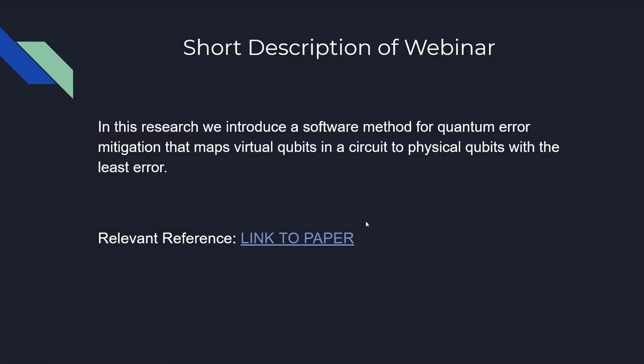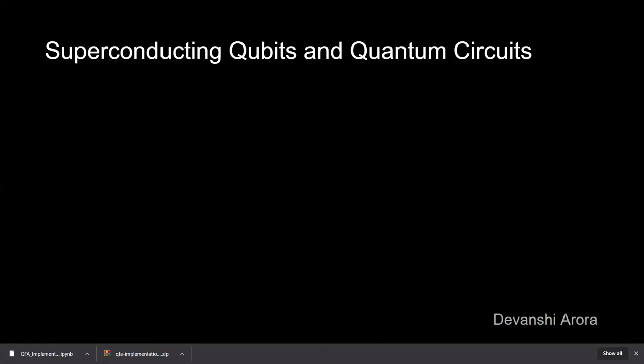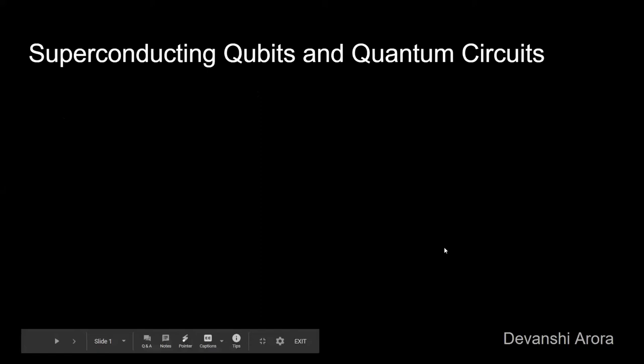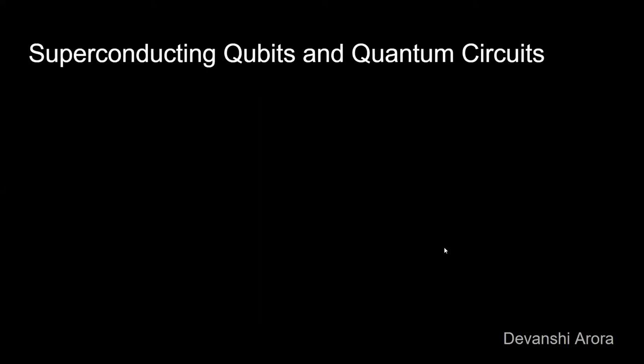The floor is yours. Thank you, I can start right now. So these slides are based on my software project named METER — Mitigation of Qubit Errors in Superconducting Qubits on single qubit circuits. I want to go through some basic concepts of superconducting qubits and quantum circuits, and why we choose superconducting qubits, which are also known as artificial atoms.